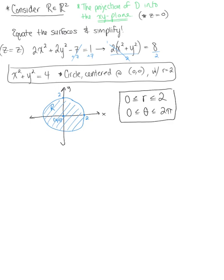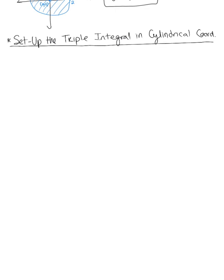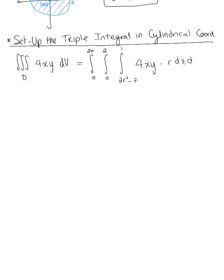We're now ready to set up the triple integral in cylindrical coordinates. We were given the triple integral over d of 4xy. Let the outer bounds be theta from 0 to 2π, the middle integral be radius from 0 to 2, and the inner integral be z from 2r squared minus 7 to 1. Then we have 4xy with differential r dz dr dθ.